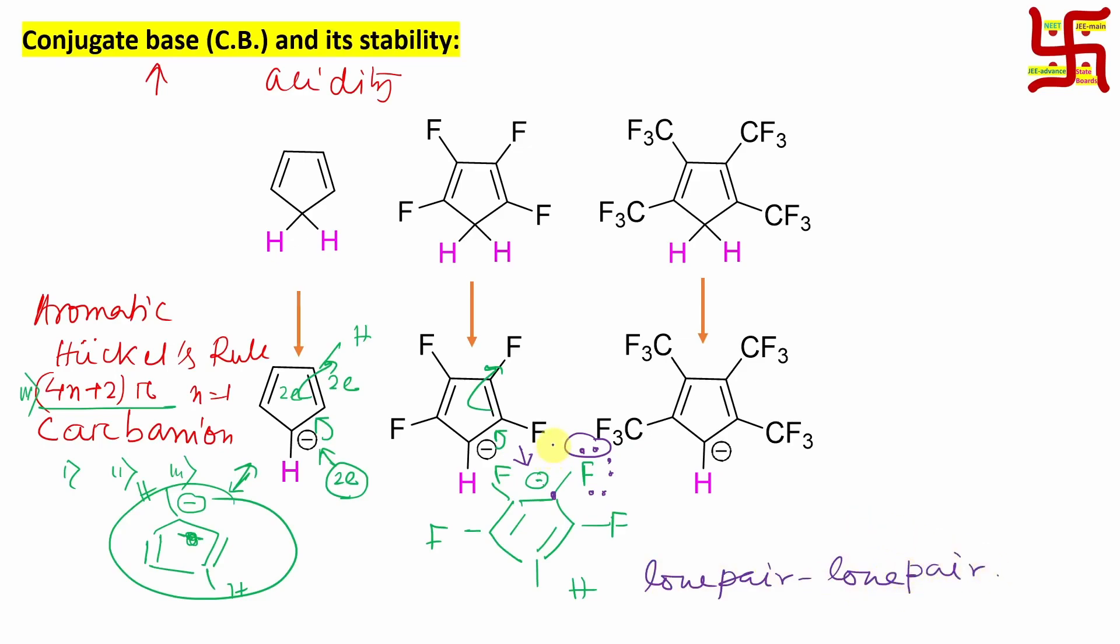It creates some amount of destabilization. I am not talking that okay, this fluorine will destabilize the carbanion so this tetrafluoro derivative will be less acidic compared to this one. No, I'm not saying that. Truth is that this tetrafluoro derivative is more acidic compared to this cyclopentadienyl derivative, why? Because fluorine has stronger minus I effect than this resonance.